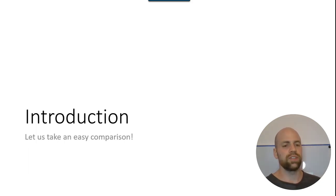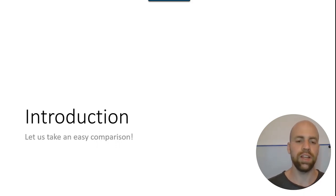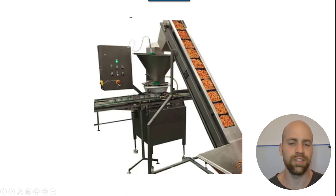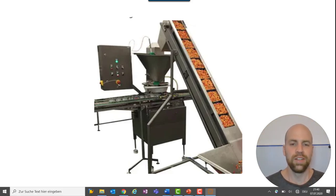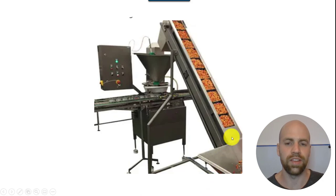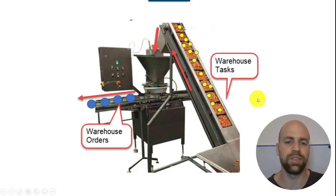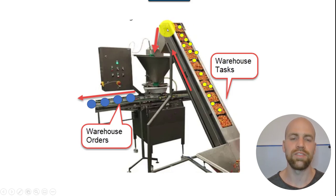Let us start with the introduction. As with all of my videos in the series Understand EWM, we look at an easy comparison from real life. This time I took a funnel at a filling system. You see that something is put into the funnel here and something is coming out of the funnel at this end. In our context, we have warehouse tasks — these yellow bubbles — flowing into the funnel, and on the other side of the funnel you have warehouse orders.